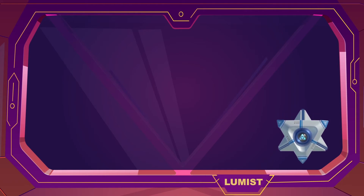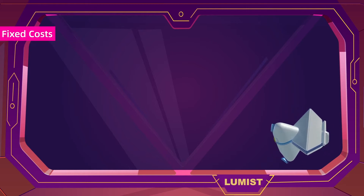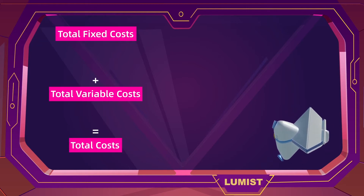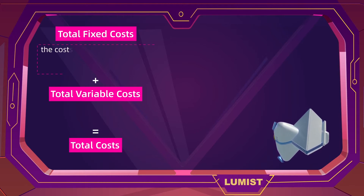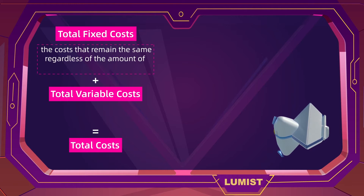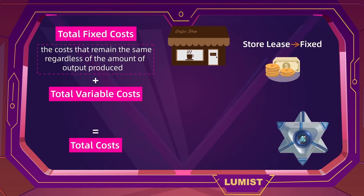Now that we know what production curves look like, let's take a look at the cost of production. There are two types of costs we need to be familiar with: fixed costs and variable costs. The sum of fixed and variable costs will be total costs. Fixed costs are the costs that remain the same regardless of the amount of output we produce — for example, a coffee shop's store lease will be the same regardless of how much coffee is being made or sold.